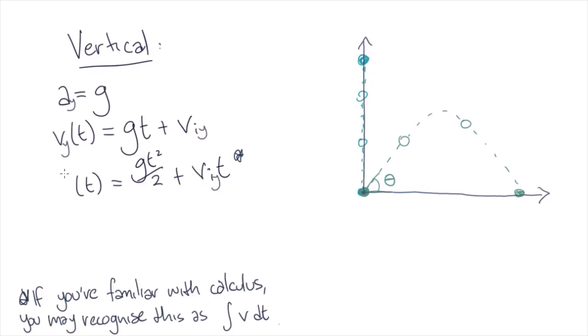So if we label our vertical direction our y-axis and relabel our variables, then we have the equations of motion in the vertical direction.